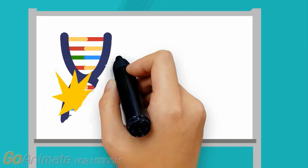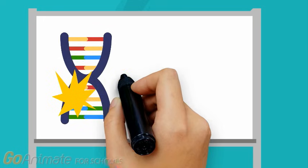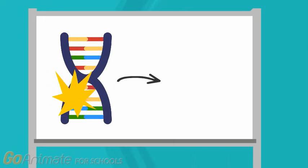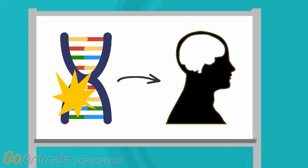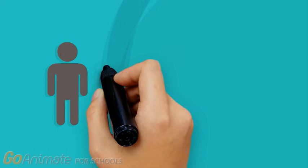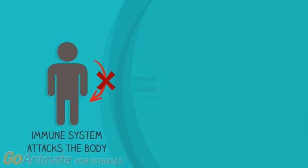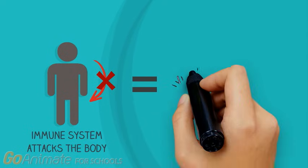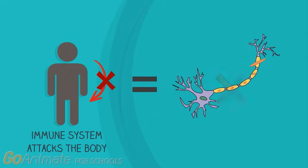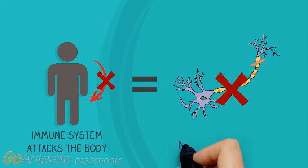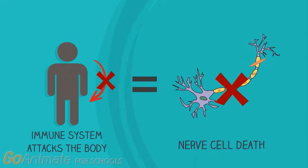One explanation contributes to a gene mutation that changes neural activity in the human body, resulting in an unprovoked immune response. This response can cause the immune system to attack its own body, killing nerve cells, ultimately disrupting its communication.